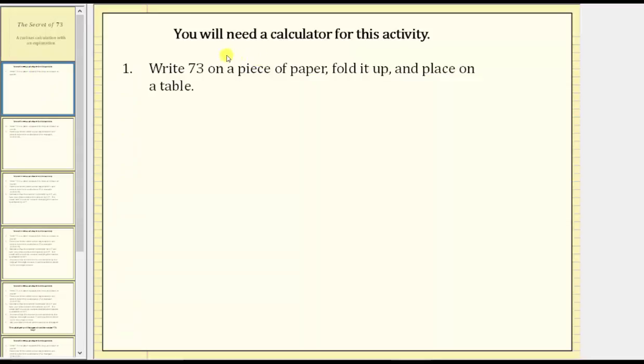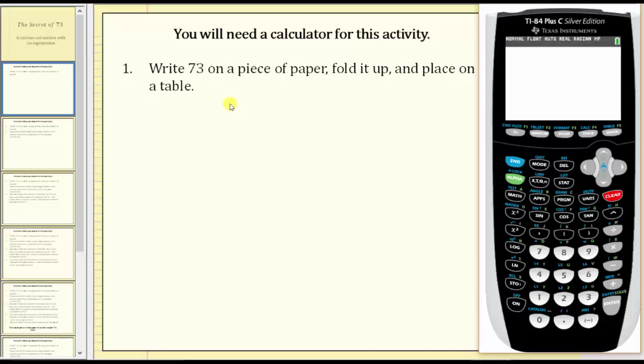To begin, you will need a calculator for this activity. Step one, write the number 73 on a piece of paper, fold it up, and place on a table.